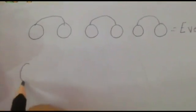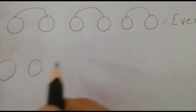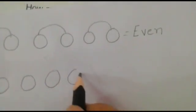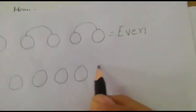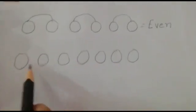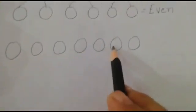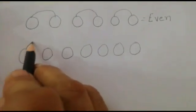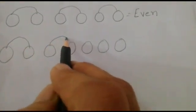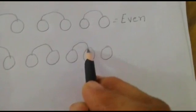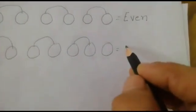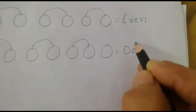Now again: one, two, three, four, five, six, seven. Now count the circles: one, two, three, four, five, six, seven. Now make pairs: one, two, three. Now one circle is left. It means this number is an odd number.